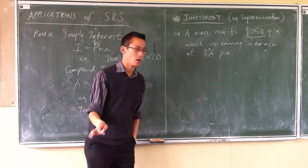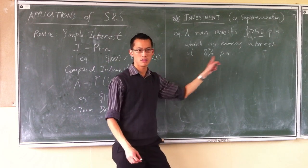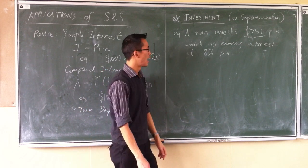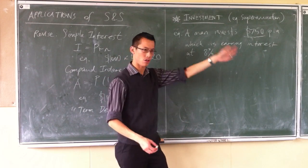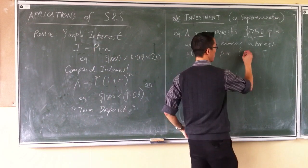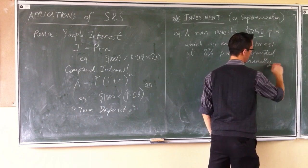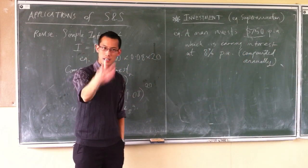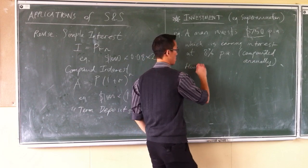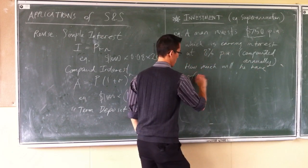Let's consider a man who invests, say, $750 every year, per annum, into a bank account - this is the way superannuation funds work. It's earning interest at 8% per annum, compounded annually. How much will we have after 20 years?